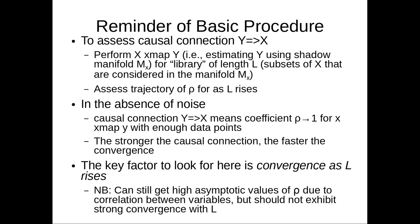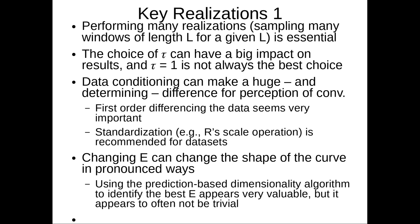In the absence of noise, a causal connection from y to x means the coefficient rho will rise to one with enough data points. The stronger the causal connection, the faster the convergence. More noise or poor choice of E leads to slower convergence. So a key factor to look for here is convergence as L rises.